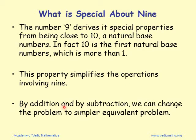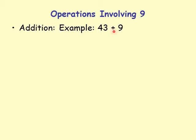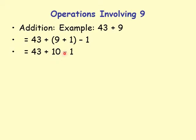By addition and subtraction, we change 9 into 10 minus 1, and that gives a simpler, equivalent problem. Example: 43 plus 9. We can change 9 to 10 minus 1, so it becomes 43 plus 10 minus 1. 43 plus 10 is 53, minus 1 is 52.